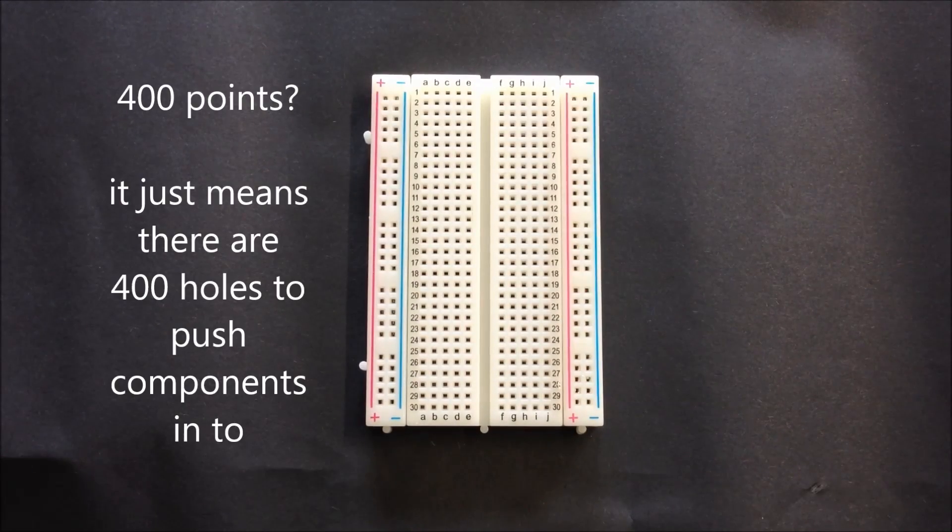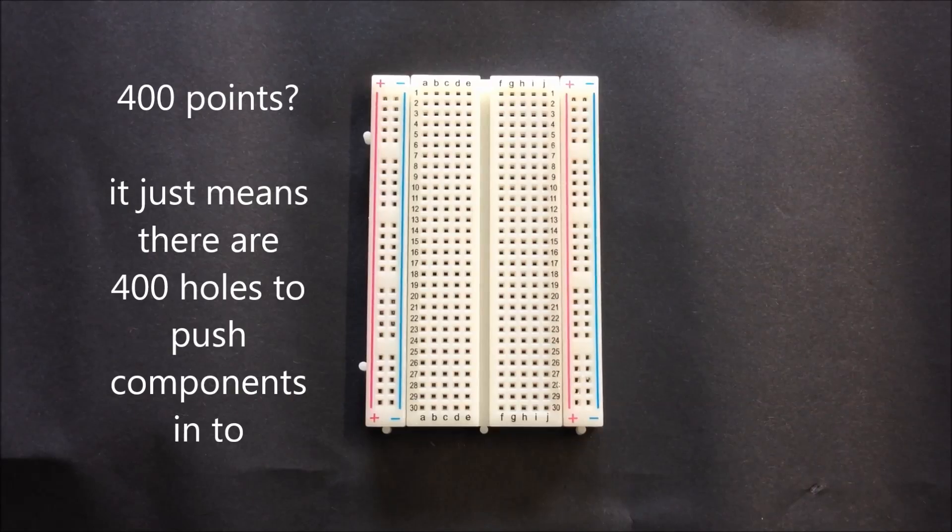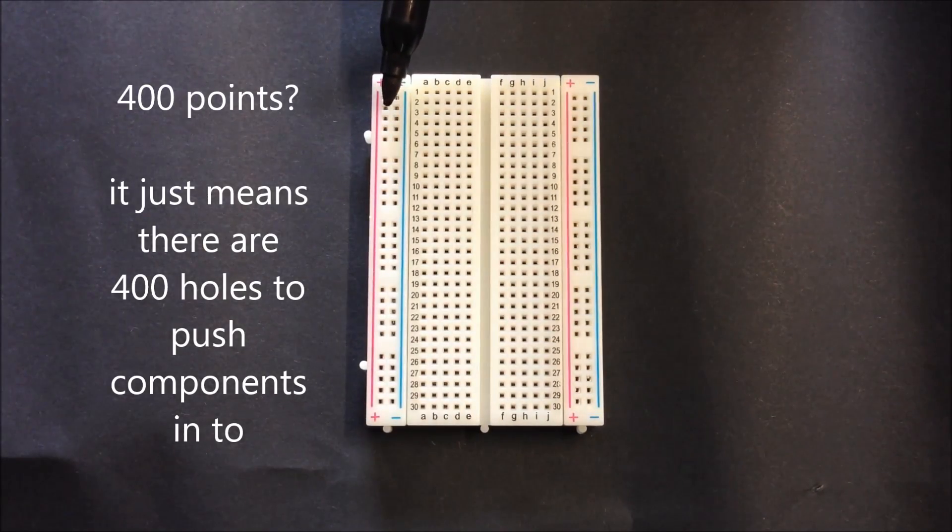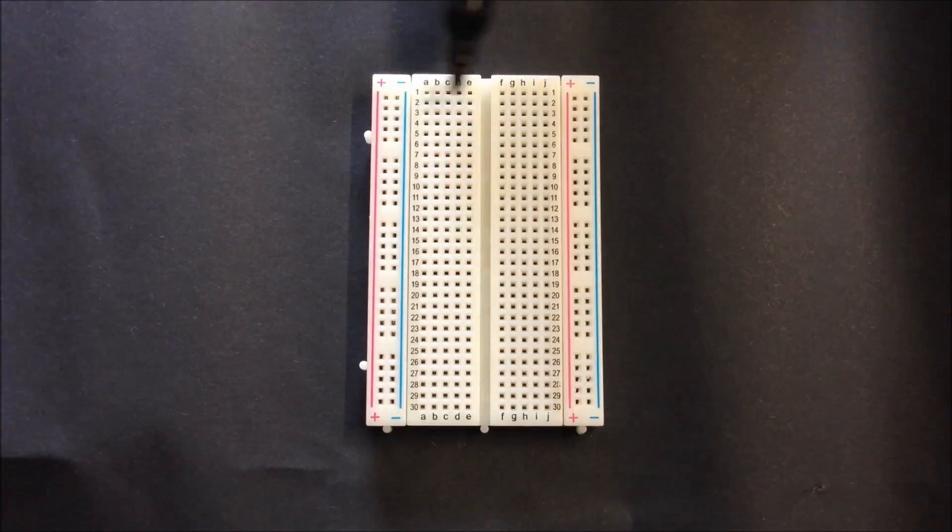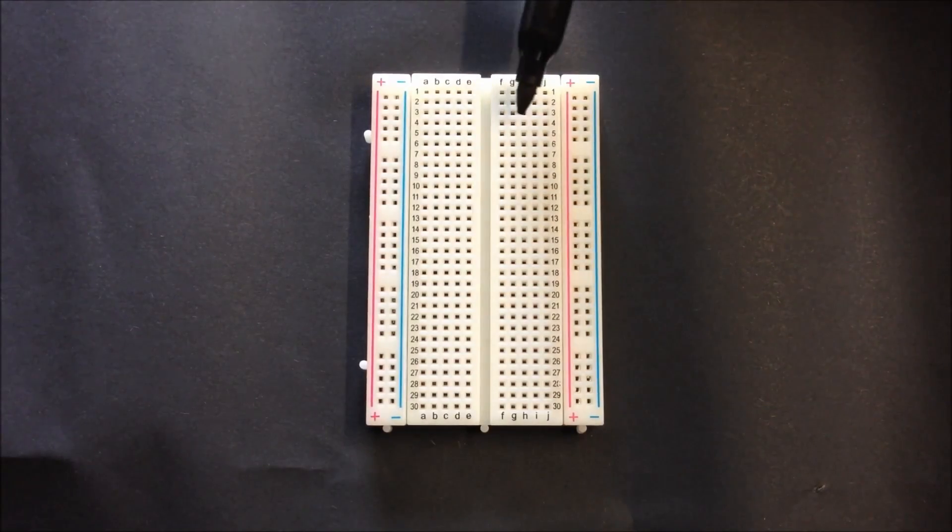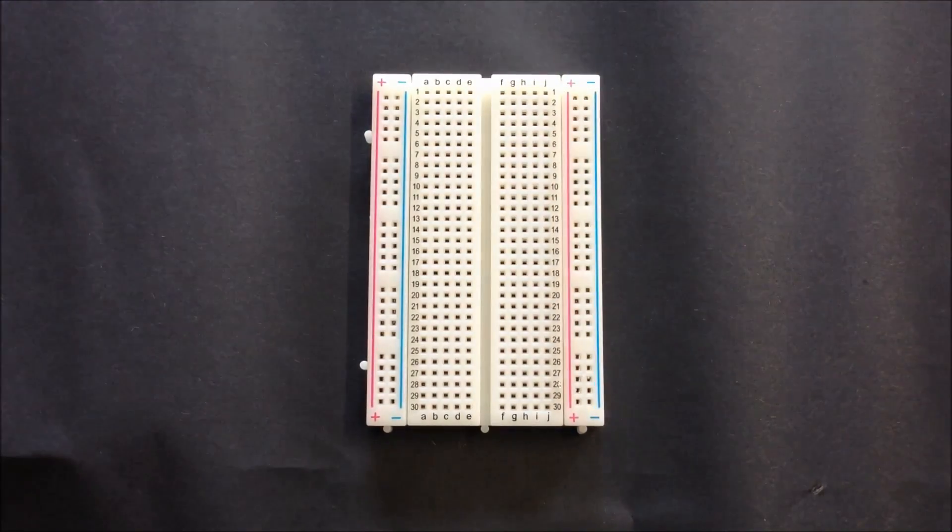This is a typical 400-point breadboard. It consists of three sections. On the outside edges here you have the rails and then the center section. And the center section is divided into two parts either side of the central channel called the gutter.